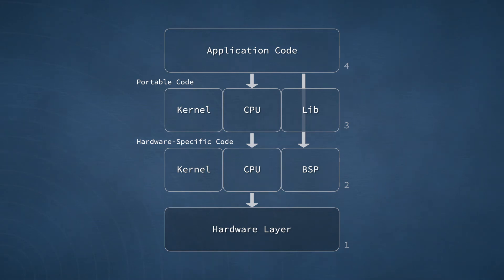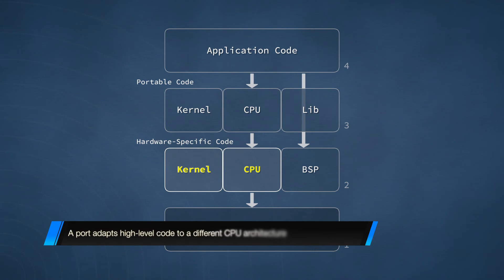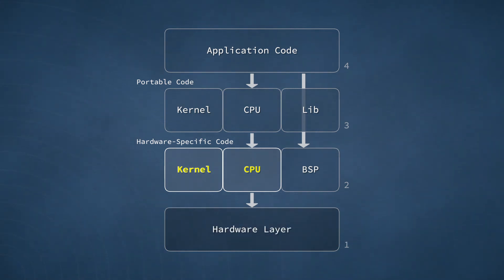Below the portable layer of code, we have the hardware-specific layer, where again we find three modules. The first two of these modules correspond to what is known as a port. A port is code that adapts a module to a particular piece of hardware. More specifically, a port adapts high-level code to a CPU architecture. This allows the kernel and the CPU block to easily run on any architecture once a port has been written for it.